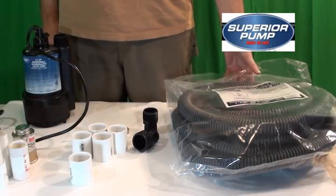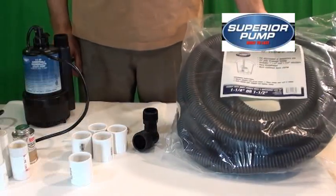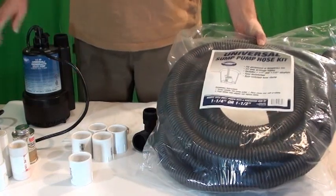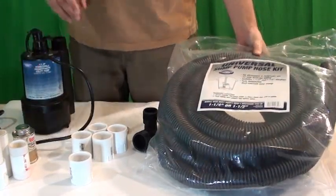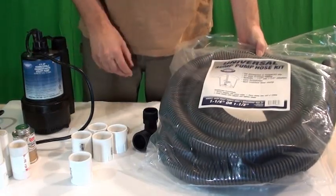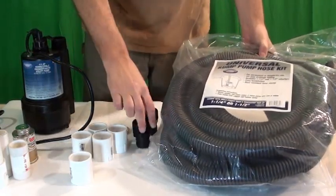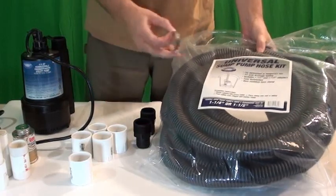Recently I bought this Superior Pump Hose Kit to run with my Utility Sump Pump. So it comes in a bag like this, it comes with two fittings and a hose clamp.